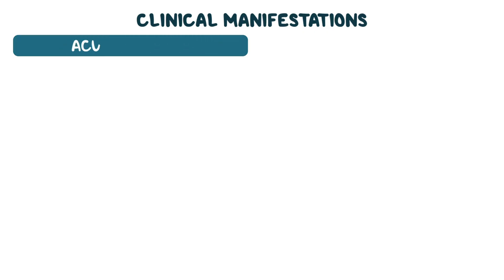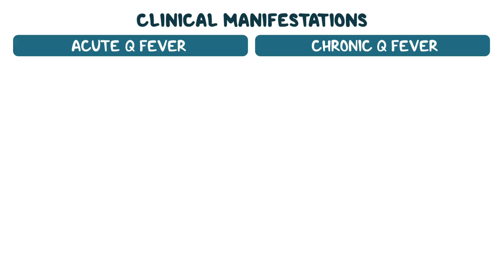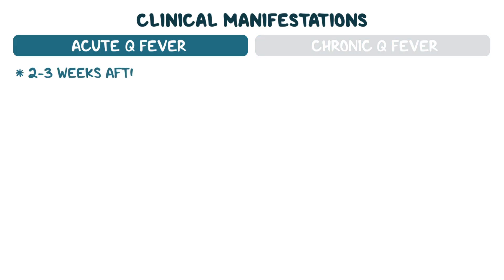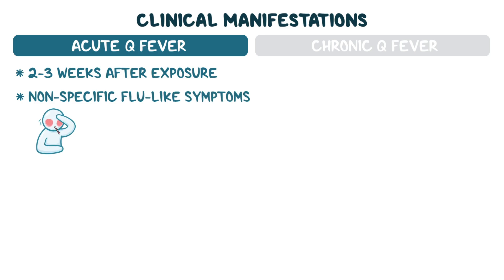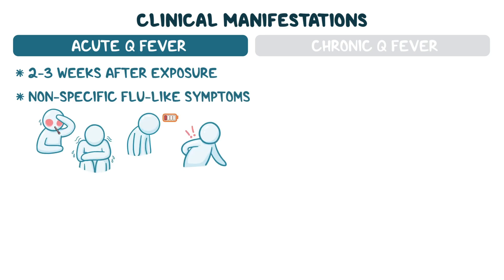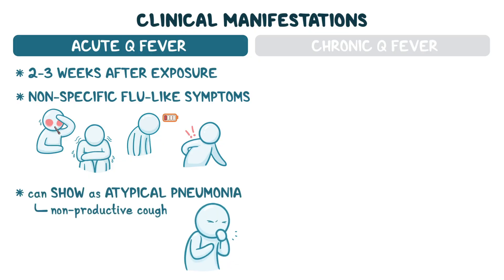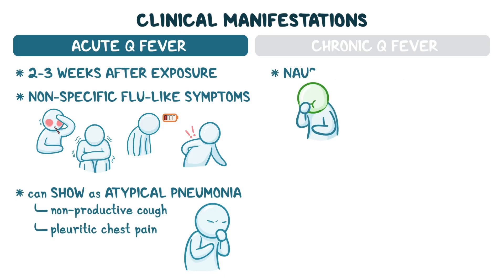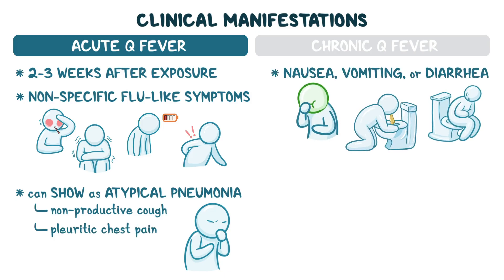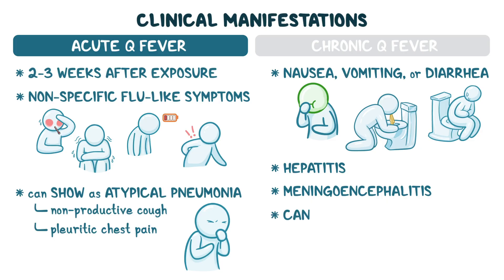Clinical manifestations of C. burnetii infection can be divided into acute and chronic Q fever. Acute Q fever takes two to three weeks to develop after exposure and can present with nonspecific flu-like symptoms, such as high fevers, chills, fatigue, and muscle aches. Infection can also show up as an atypical pneumonia characterized by non-productive cough and pleuritic chest pain, as well as nausea, vomiting, or diarrhea. Other presentations include hepatitis and, less commonly, meningoencephalitis. It's important to keep in mind that acute Q fever can often be asymptomatic, leaving a person with no symptoms at all.